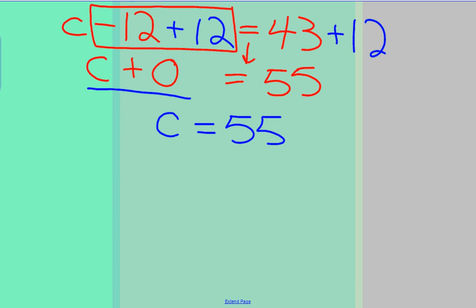Now, I need to check my answer. So I'm going to go back to my original formula. C minus 12 equals 43. In order to check the answer, I want to plug my solution 55 in for C.